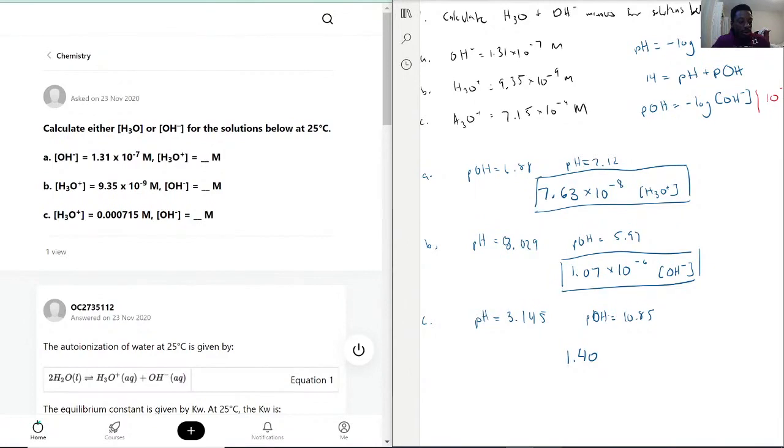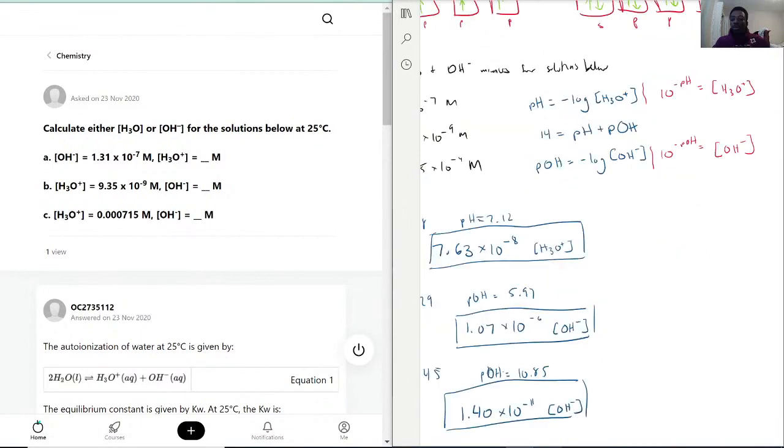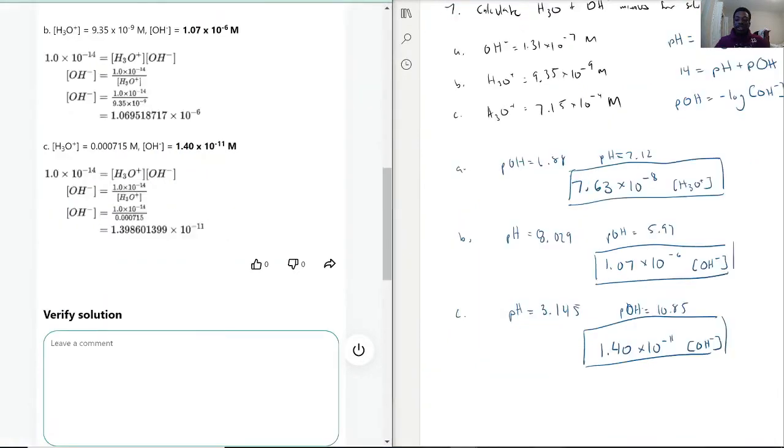So that's what we did for these questions. We based it off these formulas and made sure we were solving for what we needed. All of these formulas were used here. It's important that you go step-by-step so you don't miss anything. Let's verify: 7.63 times 10 to the negative 8, 1.07 times 10 to the negative 6, and 1.40 times 10 to the negative 11. This is correct.